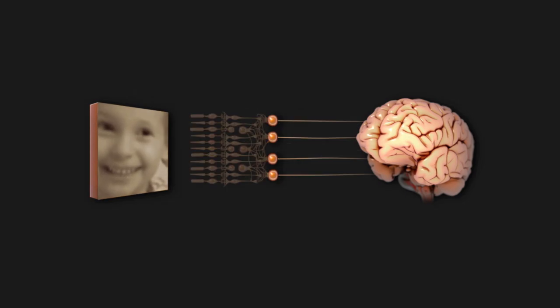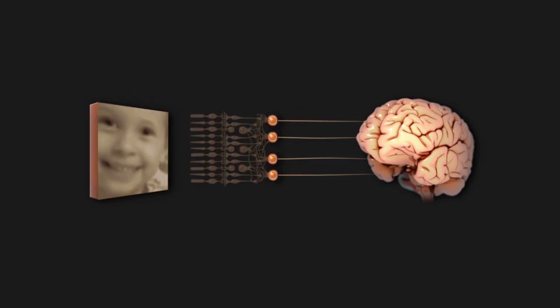When you have a retinal degenerative disease, what happens is the input cells, your photoreceptors, die, and then the interneurons, because they're connected to them, start to die too, but the ganglion cells remain intact.